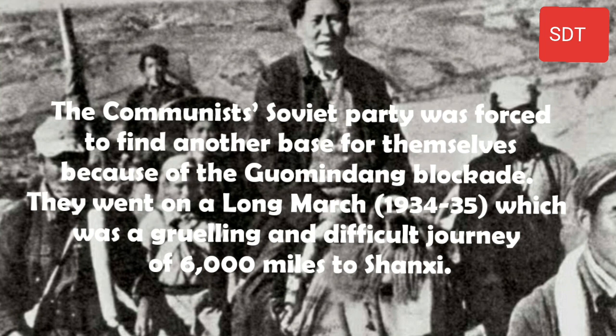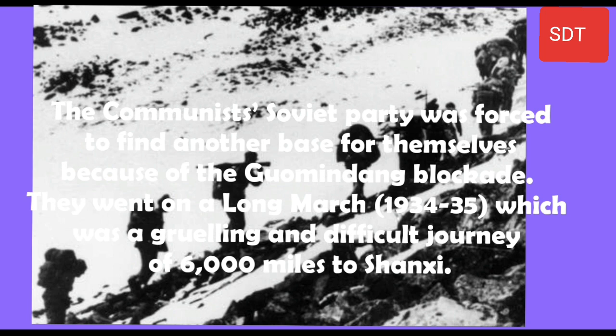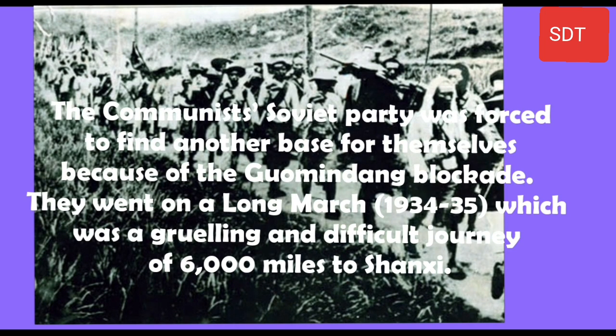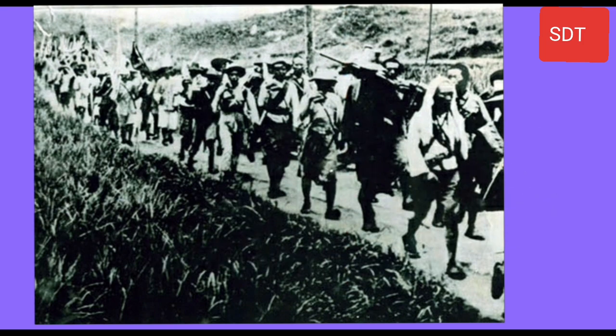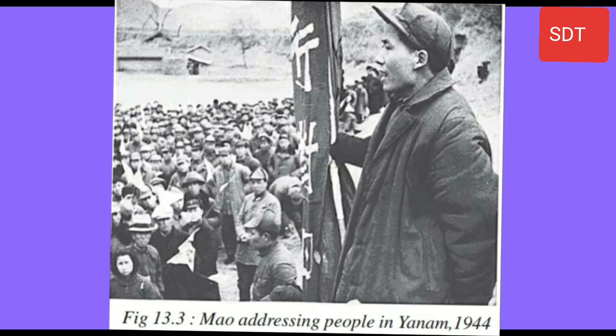The Communist Party was forced to find another base because of the Guomindang blockade. They went on the Long March (1934–35), a grueling journey of 6,000 miles, and set up their new base in Yanan. Here they further developed their program to end landlordism, carry out land reforms, and fight foreign imperialism. This twin agenda of land reforms and nationalism built a strong social base for them.